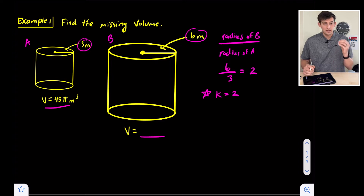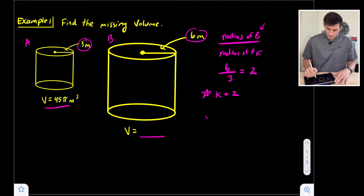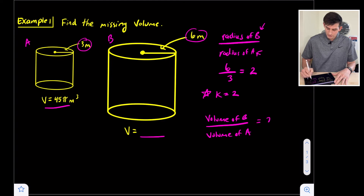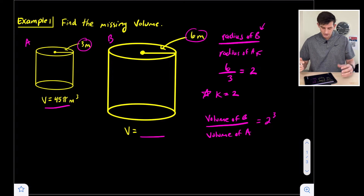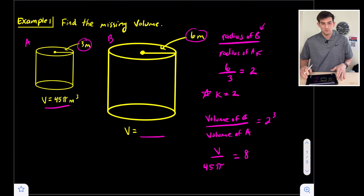Since K is equal to 2, we can take the ratio of the volumes and set that equal to K cubed, which in this case is 2 cubed. Since we did B over A, we do volume of B divided by volume of A, set equal to 2 cubed. The volume of B we don't know, so we'll call it V. The volume of A is 45π, and we set that equal to 8, because 2 cubed is 8.